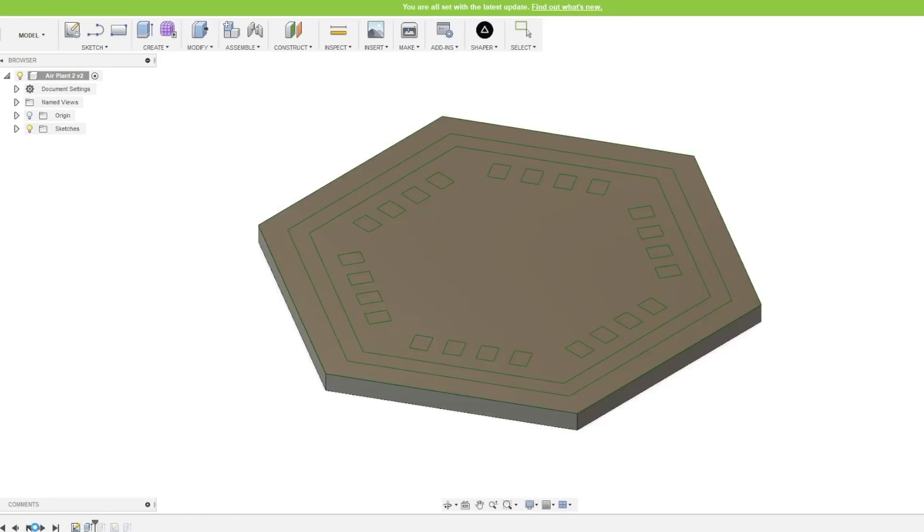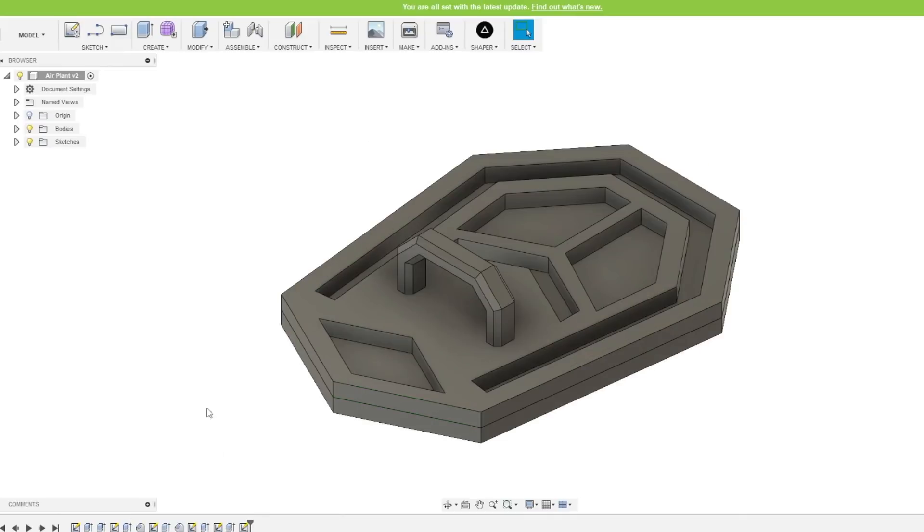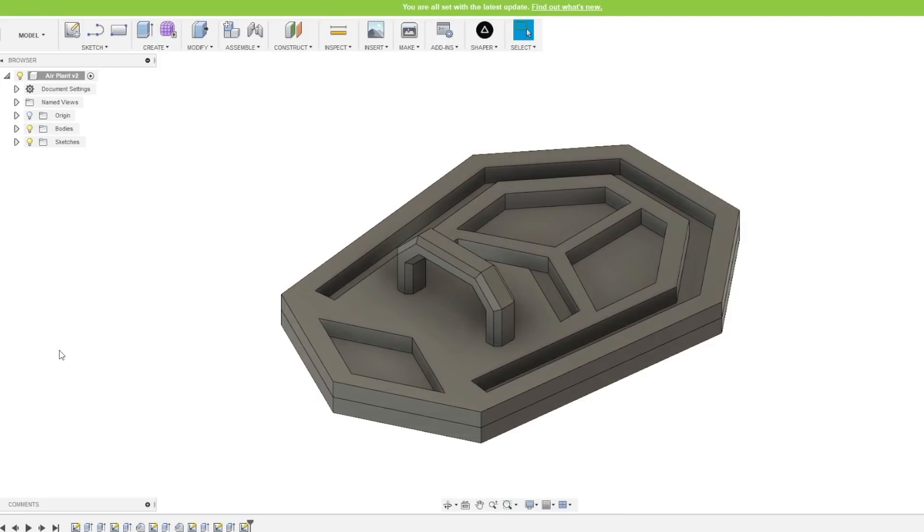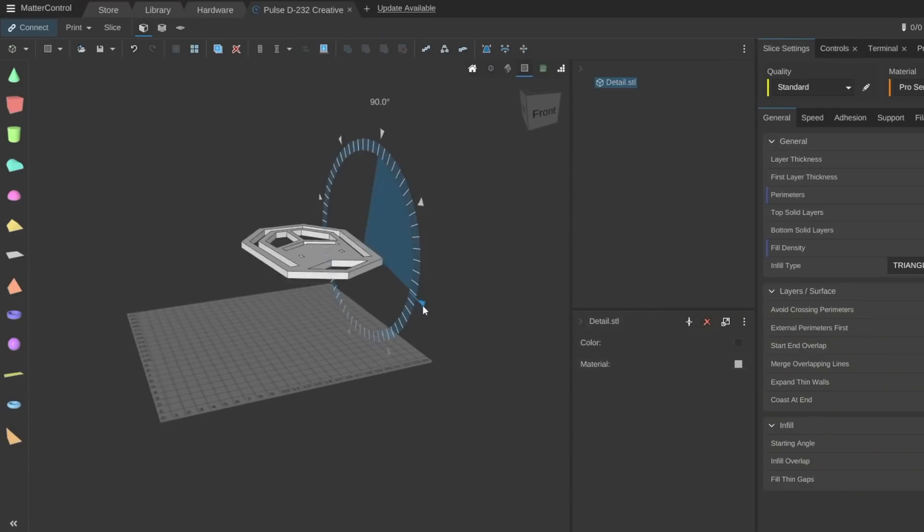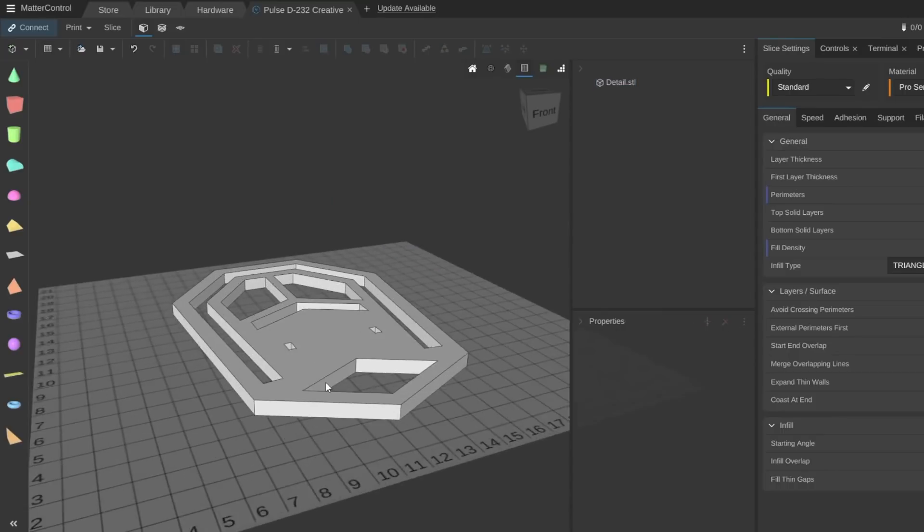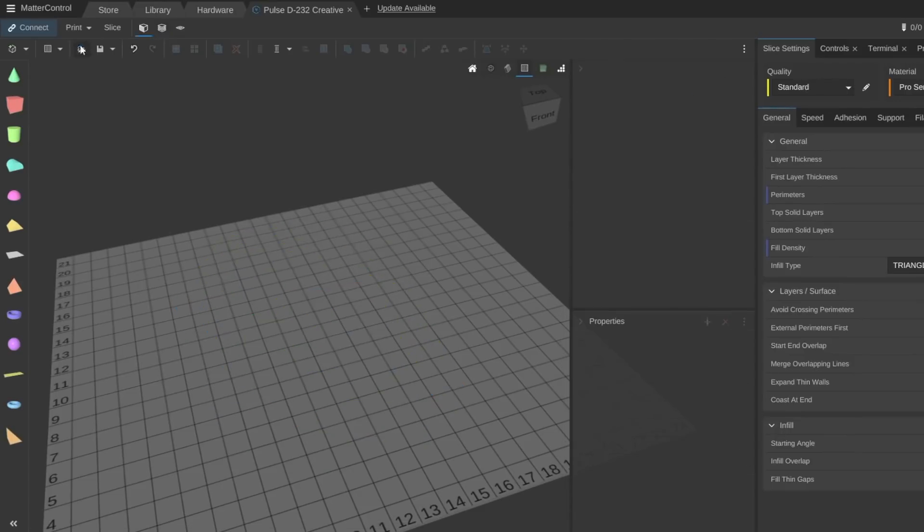Using the SVGs that Dylan designed, I threw them into Fusion 360 and made multiple bodies so that I could export them as separate 3D models. So, I could have a back, a center, and then the loop that are all separate pieces that I could print individually. Then I dropped them into Matter Control, oriented them, centered them in the build plate, and then sliced them and double-checked the G-code to make sure that everything was okay.